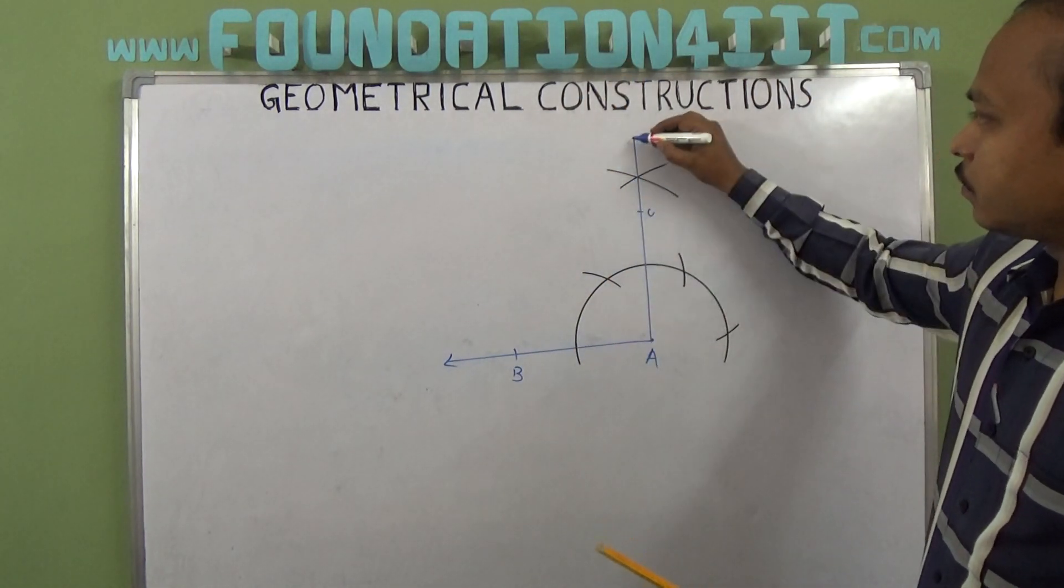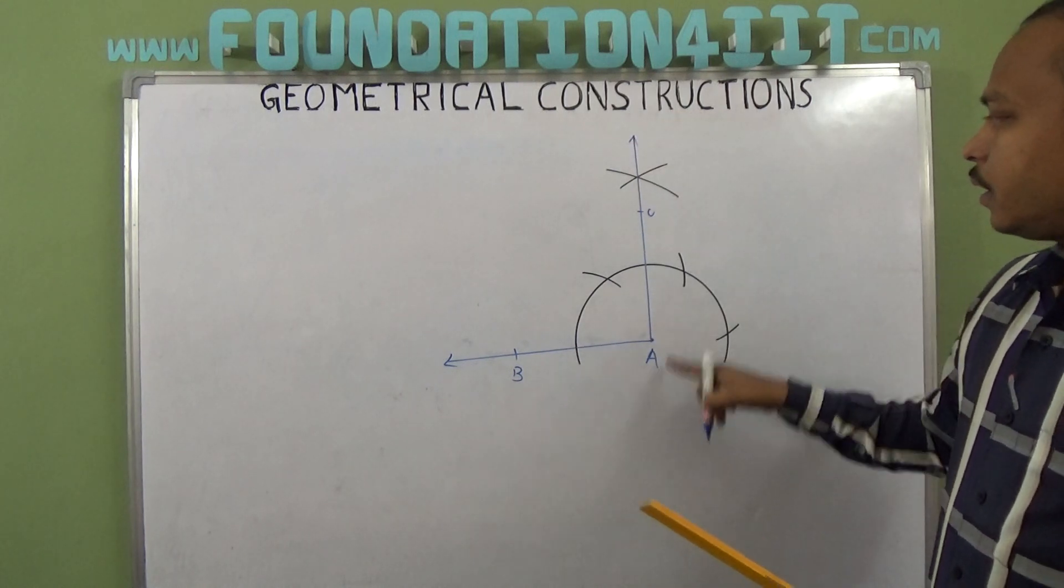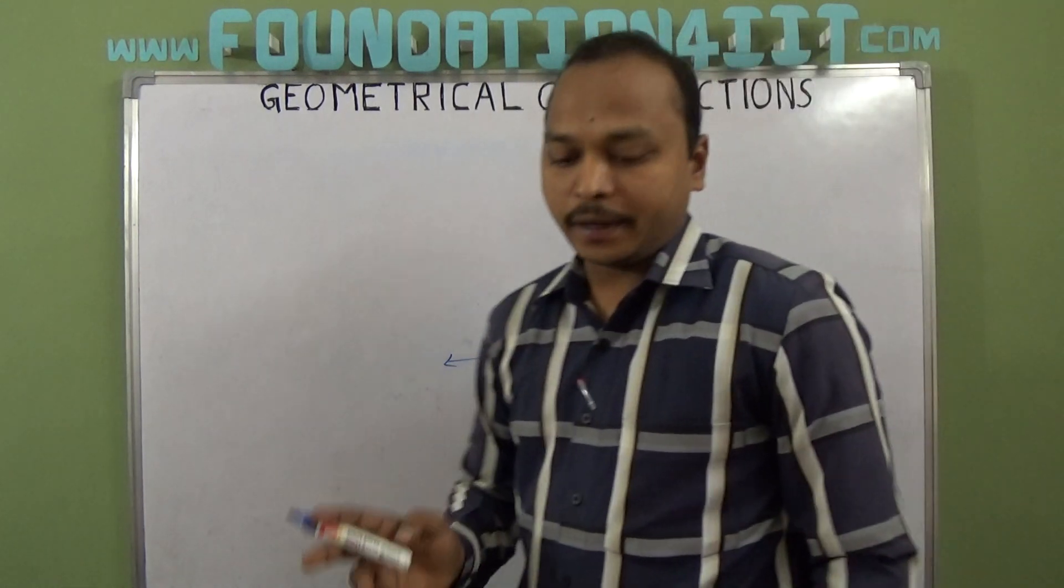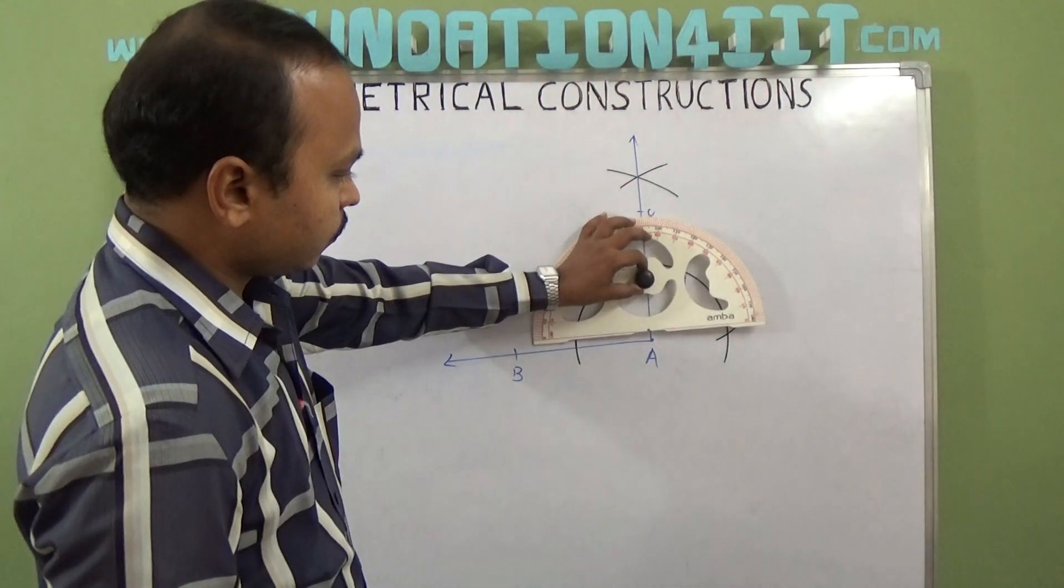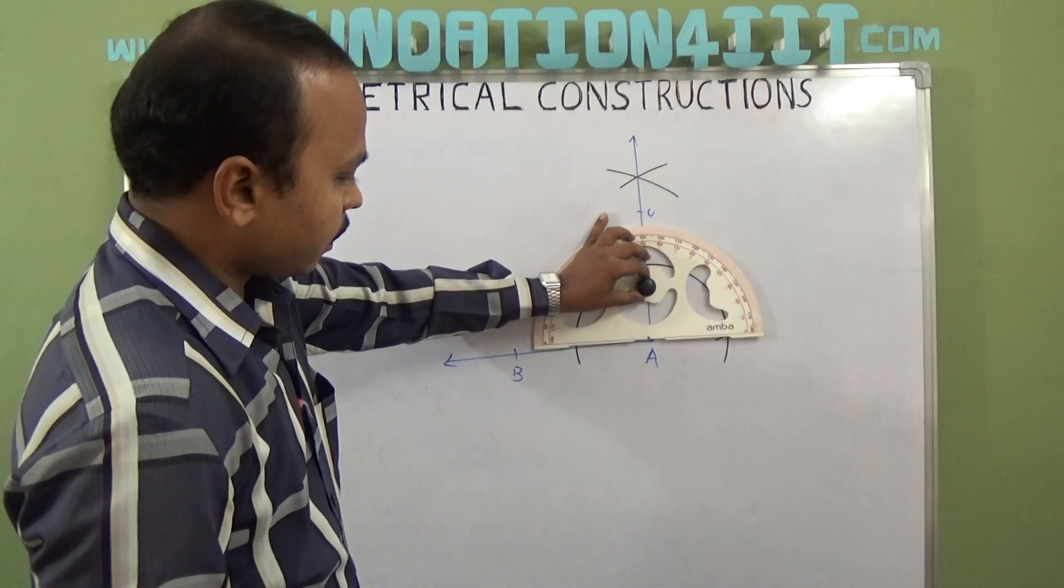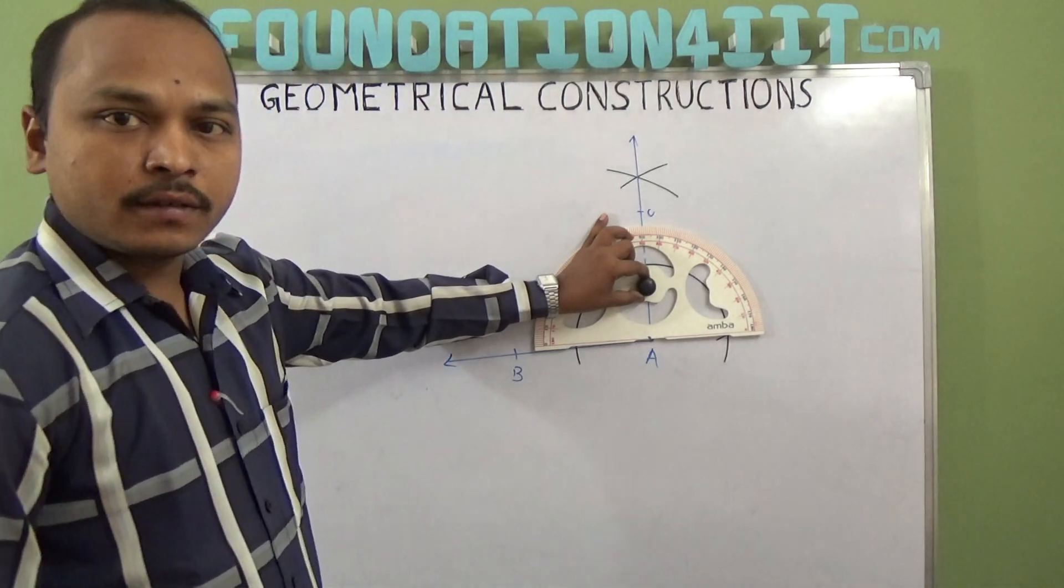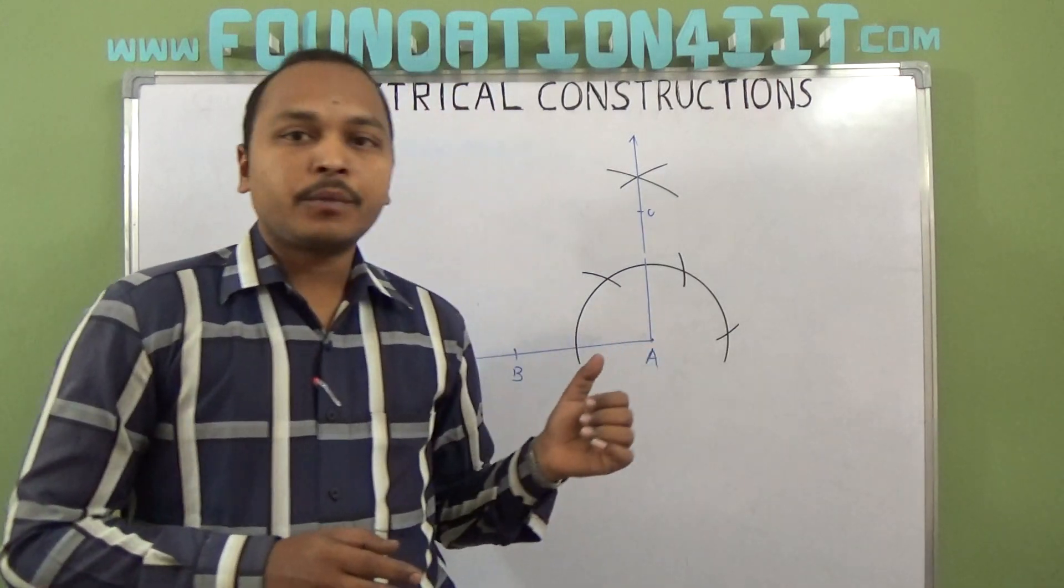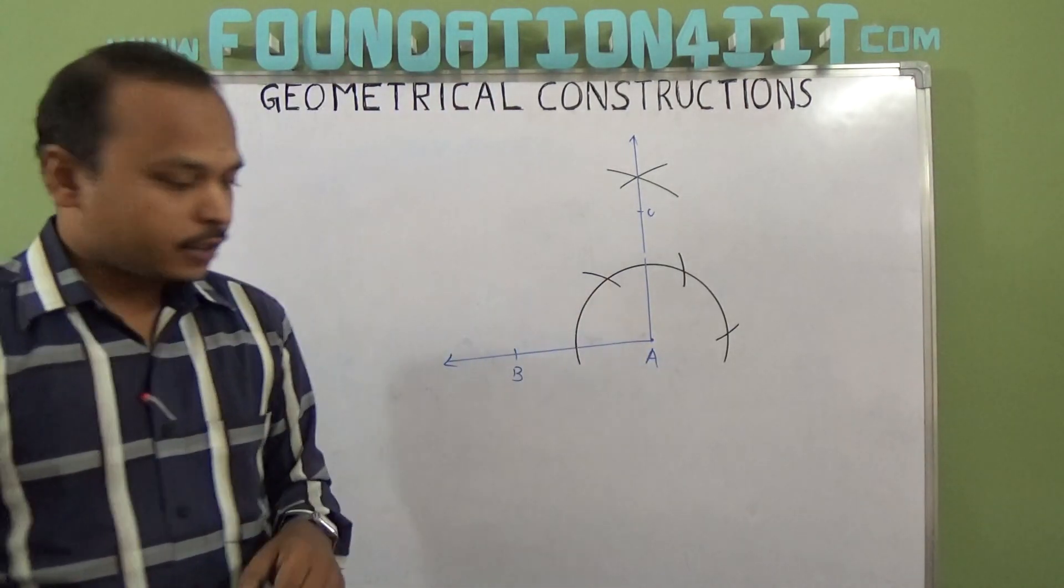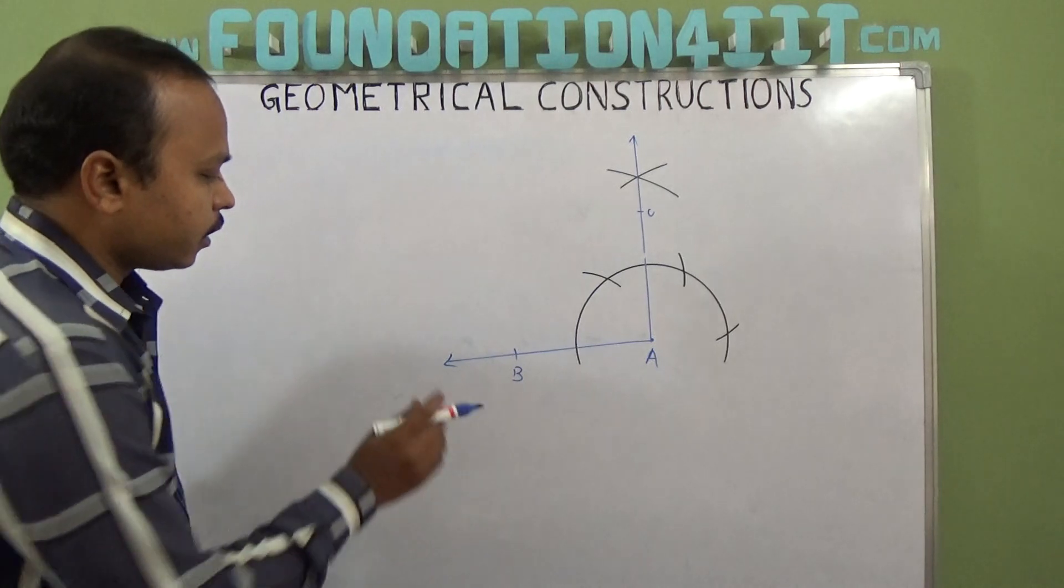Now this angle, if you keep the point C, so angle BAC is exactly 90 degrees. You can check with protractor, it shows exactly 90 degrees. So this is the way we can construct angle 90 degrees at any point. We will check from this right side also one more.